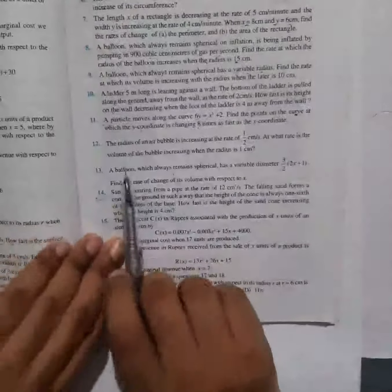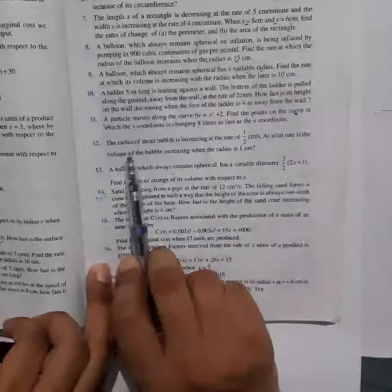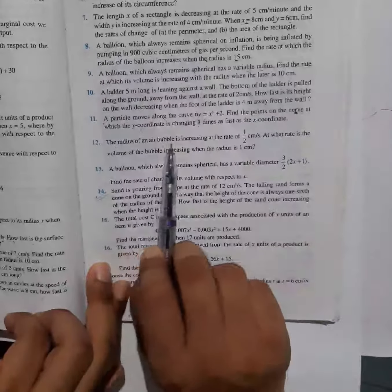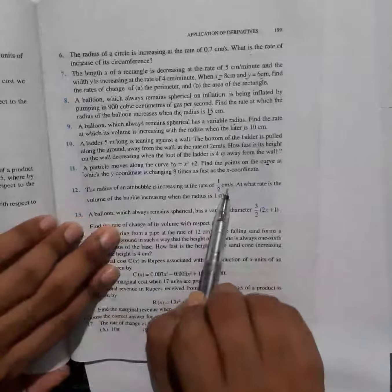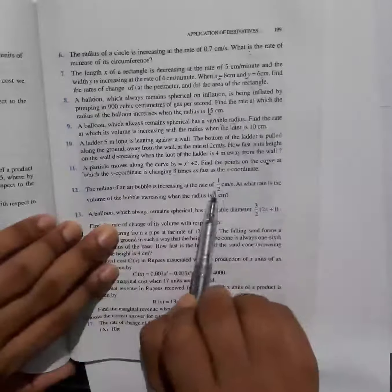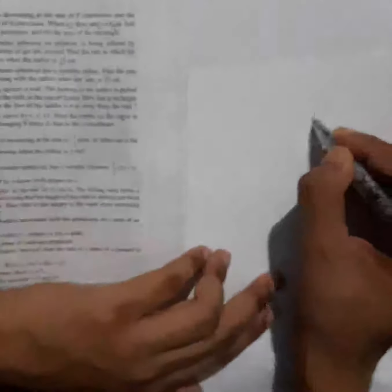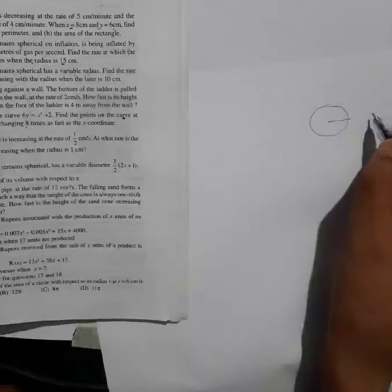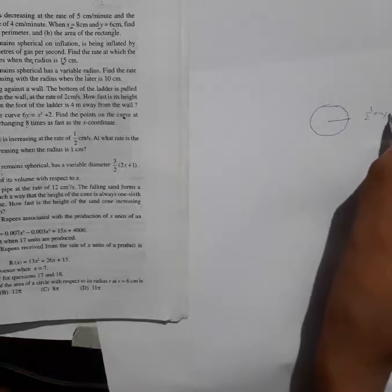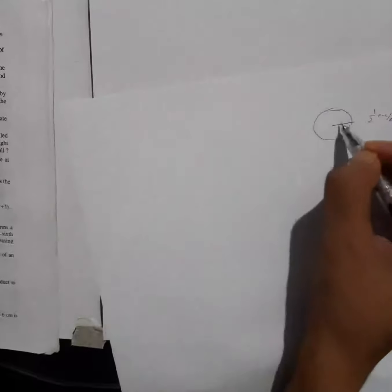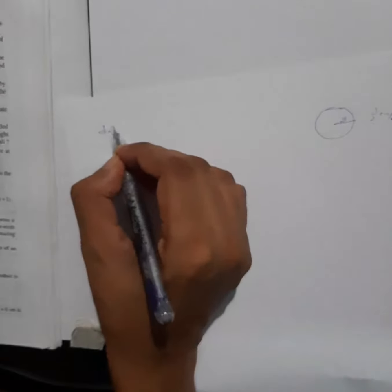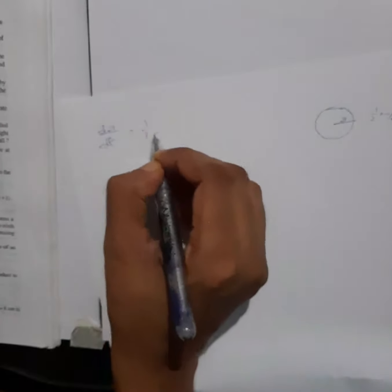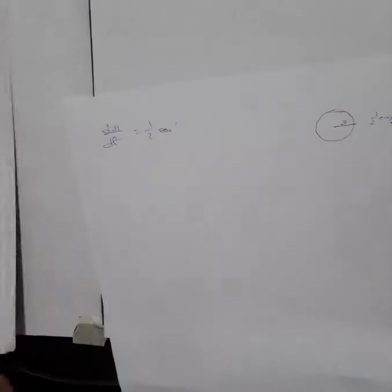Question number 12: the radius of an air bubble is increasing at the rate of half centimeter per second. The air bubble is in the shape of a sphere. Its radius is increasing with respect to time, so if we take the radius as r, then dr/dt is equal to half centimeter per second.